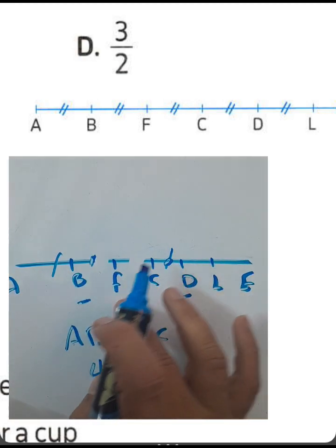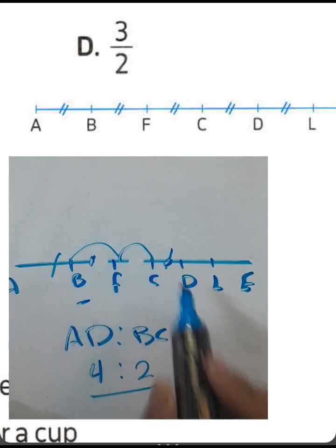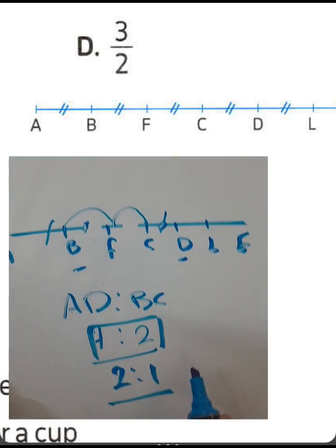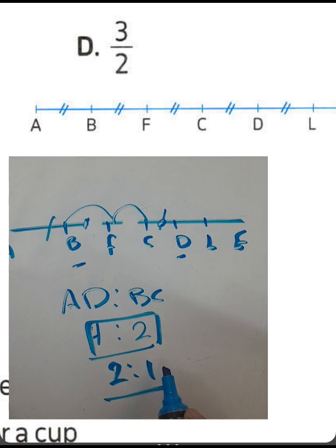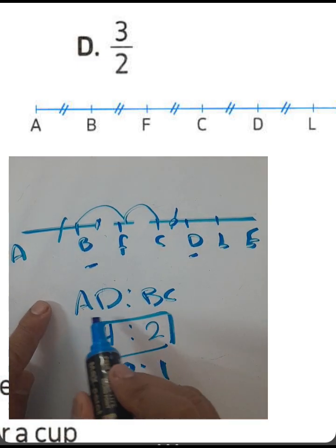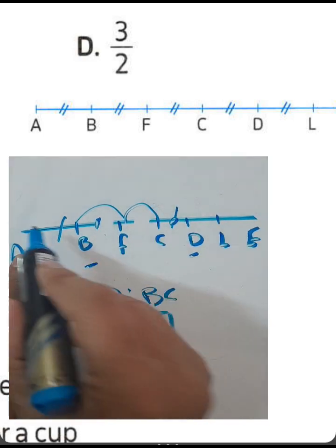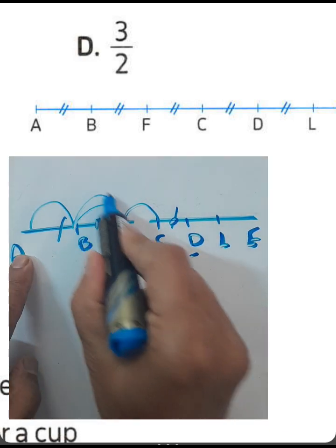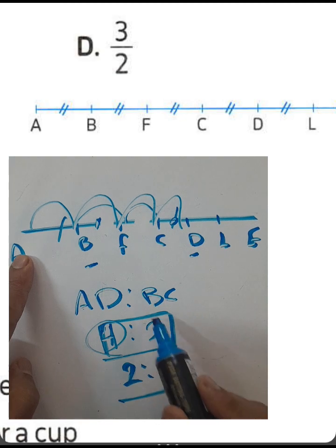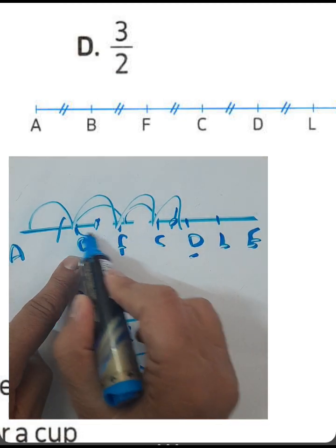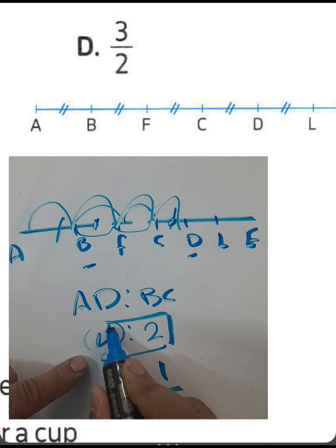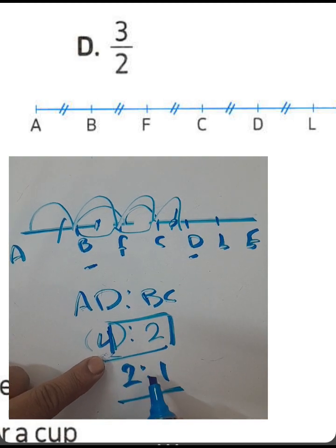To confirm: from E to D count one, two, three, four parts. From B to C: one and two — two parts. So the ratio between ED and BC is four to two, which simplifies to two to one.